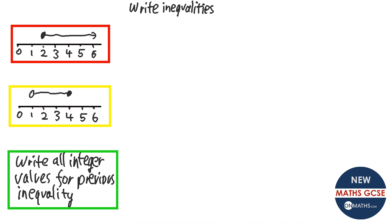Next, we're asked to write inequalities from the number line — just working the other way. I always start off with x and think, where is x compared to the number? Well, x is always going to be greater than the number, which is 2. The number I write down is just what I read off where the dot is. Now the next question I ask: can it be equal to the number? It's a filled-in dot, so yes — it's x is greater than or equal to 2.